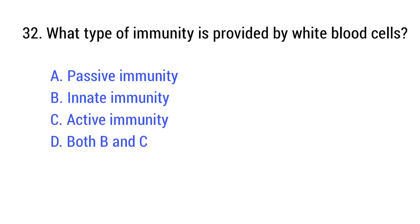Question number 32. What type of immunity is provided by white blood cells? The right answer is option D: Both B and C.